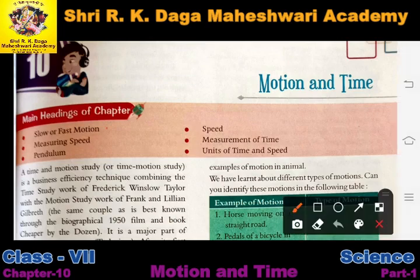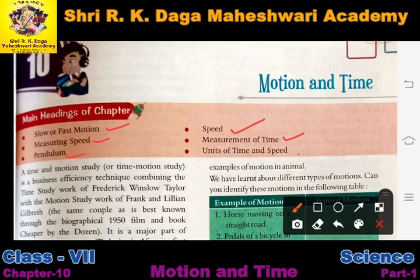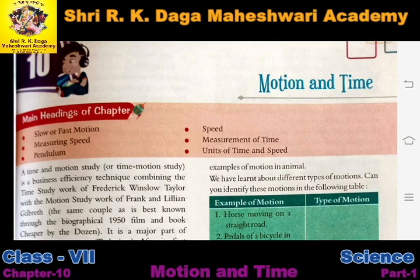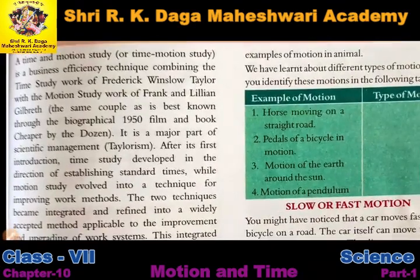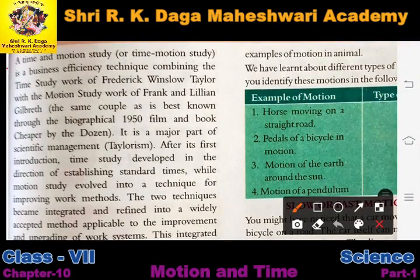Let us see the main headings of the chapter. We are going to study slow or fast motion, then what speed is and how we can calculate the speed of any object. We will also study what a pendulum is, speed of different objects, measurement of time, and units of time and speed. Basically in this chapter we will talk about moving objects, their speed, and their relation with time.